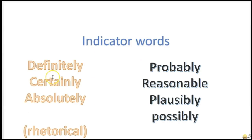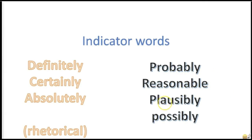Indicator words for deductive arguments include words like 'definitely,' 'it's certainly the case that,' 'it's absolutely the case that.' In contrast, inductive arguments use phrases like 'it's probably true that,' 'it's reasonable to believe that,' 'it's plausible that such and such is the case,' or 'it's possible that such and such is the case.' This reflects probabilistic reasoning versus necessary reasoning.